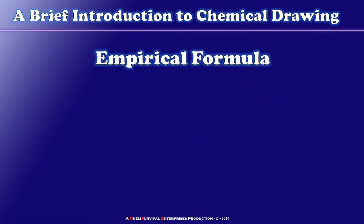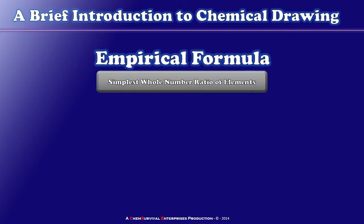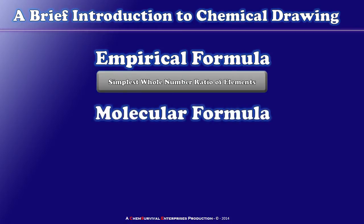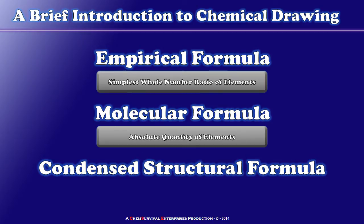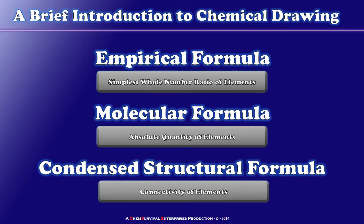The first is the empirical formula, used very early in the history of chemistry, which contains only the simplest whole number ratio of elements. Another technique is the molecular formula, which gives not just a ratio of elements but the absolute quantity of each type of atom within the molecule. The third is the condensed structural formula, which gives the quantities of elements and also how those atoms are arranged and connected to one another.